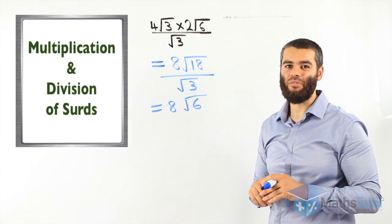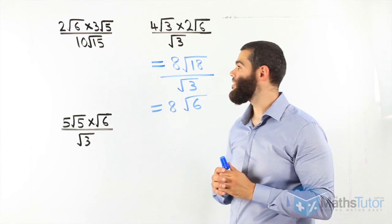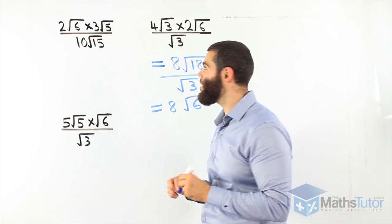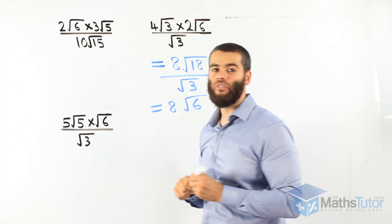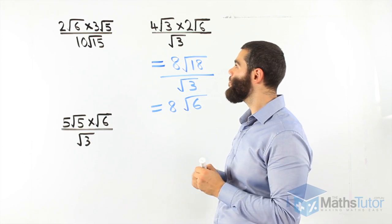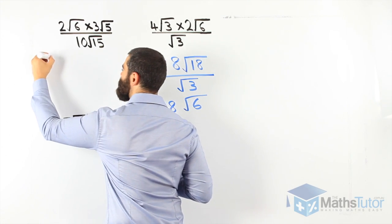The next example now. 2 root 6 times 3 root 5, all divided by 10 root 15. We follow the same process. We multiply the numerators first.